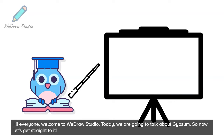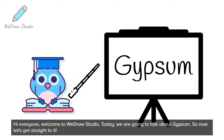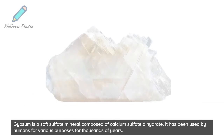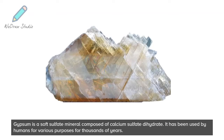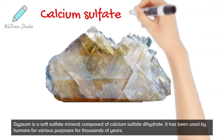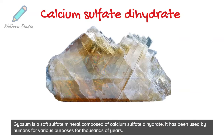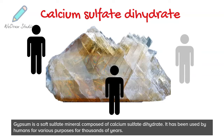Hi everyone, welcome to WeDrawStudio. Today we are going to talk about gypsum. Gypsum is a soft sulfate mineral composed of calcium sulfate dihydrate. It has been used by humans for various purposes for thousands of years.